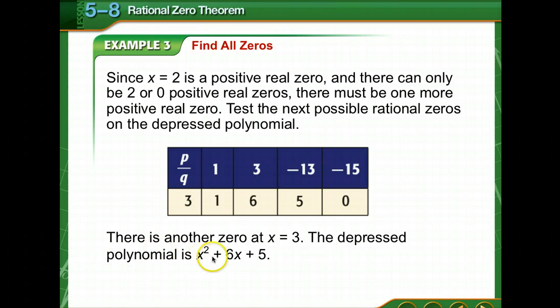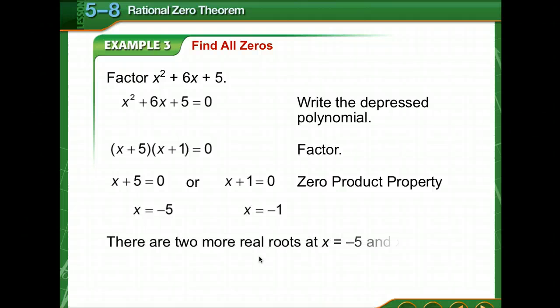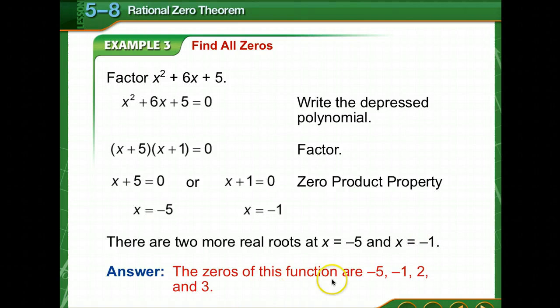There is another zero at x equals 3. Now the next depressed polynomial is x squared plus 6x plus 5, and we can factor that one. We know the other two are negative 5 and negative 1. So there are two more real roots at negative 5 and negative 1.